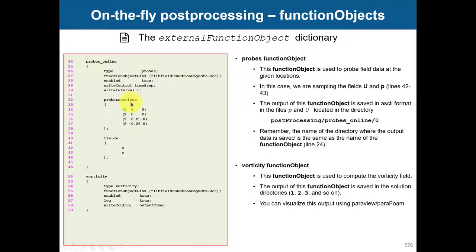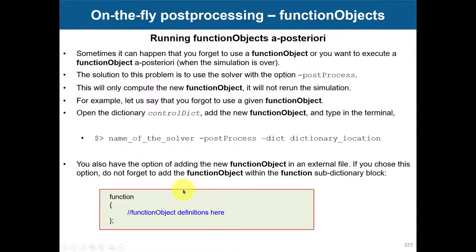Here we have another function object to sample a quantity — U and P — at a specific location. The type is 'probes', using this library. You can change it on the fly — you can enable or disable the sampling frequency. Then probe at these locations, compute vorticity, and access this library. As you can see, there are many options and I'm not going into detail since it can be very complex.